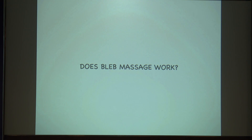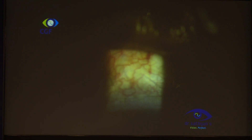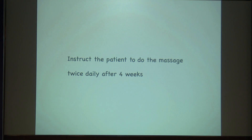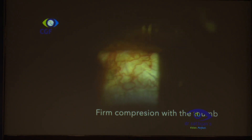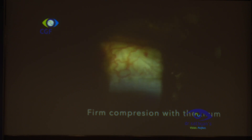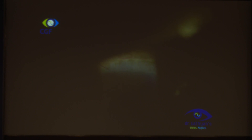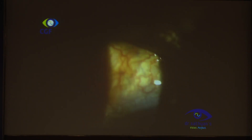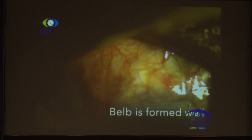Bleb massage can help. In the immediate post-operative period, it is better not to do massage as sometimes the sutures may give away. You can wait, and if the IOP is slightly high and you know it is a tight scleral closure, after seven to ten days you can massage at the OPD at the slit lamp. Only after four weeks do you tell the patient to do the massage. With a tight scleral flap, you just give a firm compression — usually in the superior area, just temporal to the bleb — and the bleb forms well.